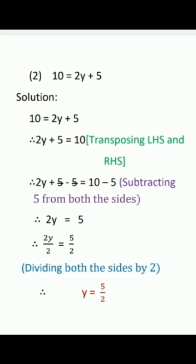Second equation: 10 equals 2y plus 5. Rewrite as 2y plus 5 equals 10. Remove plus 5 by subtracting 5 from both sides: 2y plus 5 minus 5 equals 10 minus 5. The 5s cancel, giving 2y equals 5. Divide both sides by 2: 2y/2 equals 5/2, so y equals 5/2.